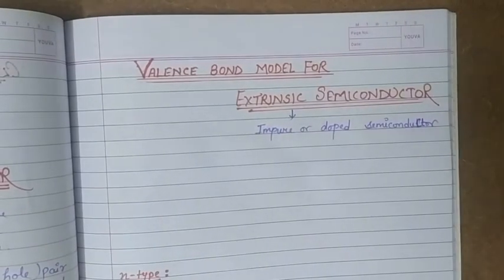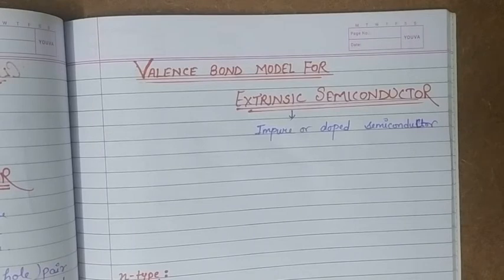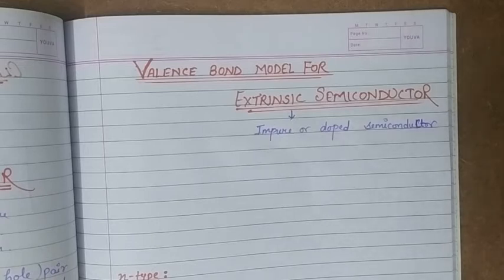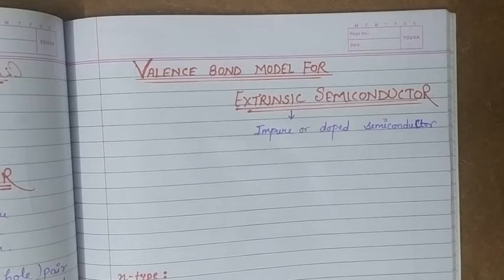The main motive for doping or making an impure semiconductor is to get a semiconductor which has high conductivity, because doping gives us a highly conductive semiconductor. Now, these semiconductors are classified depending on the impurity atoms used to dope them, and on that basis they are of two types.